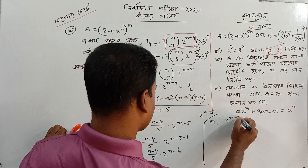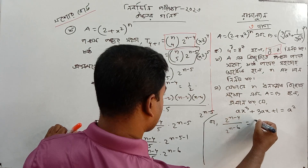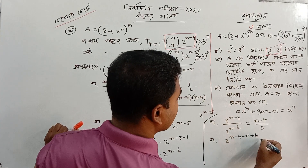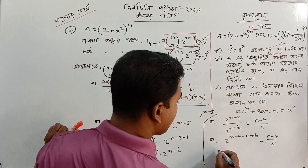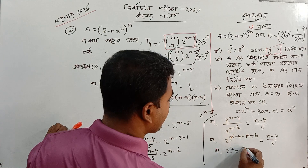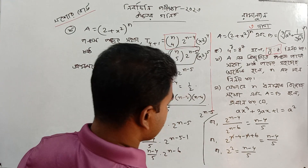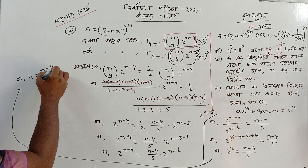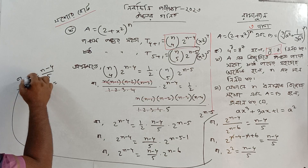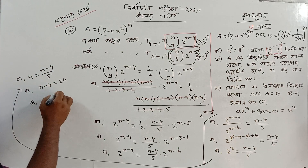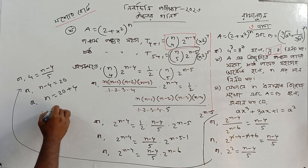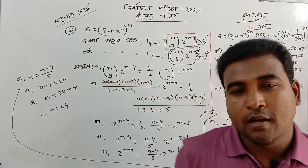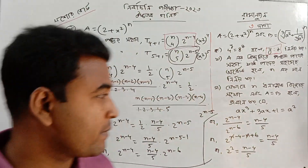Now we will take the power n minus 2. Bar — 2 to the power 8 minus 4, 2 to the power 8 minus 6, equal to n minus 4 by 5 bar. Equal to n minus 4 by 5, to the power 3. How to be equal to n minus 4 — n minus 4 — 4 greater than n minus 4, which is 24. The power has become 24.